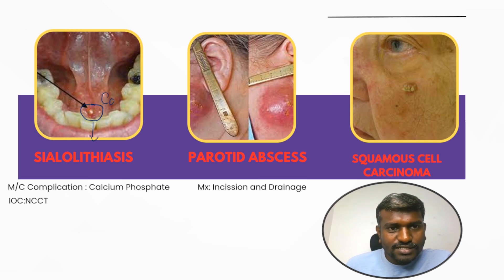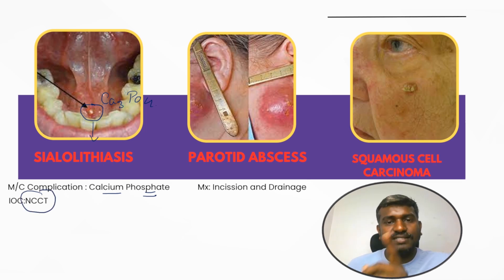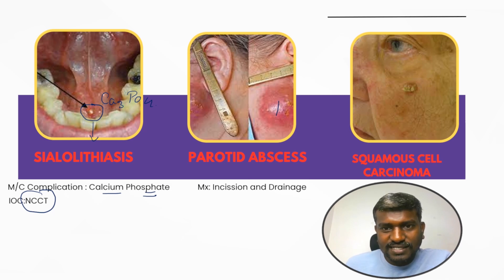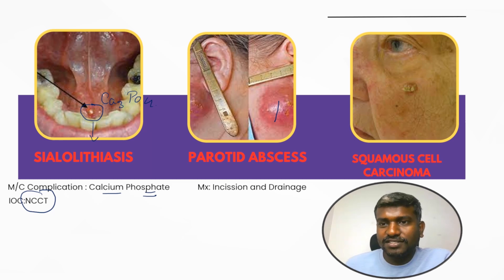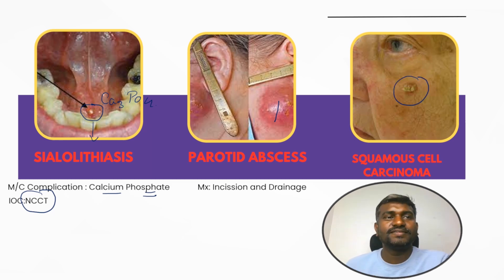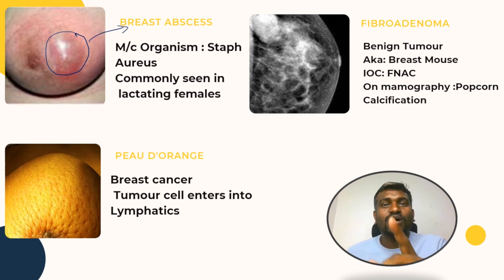If you see an image like this in the exam, this is going to be sialolithiasis — due to calcium phosphate deposition. The investigation of choice is NCCT (non-contrast CT). The second image is parotid abscess — managed with incision and drainage followed by antibiotics. The third image is squamous cell carcinoma.